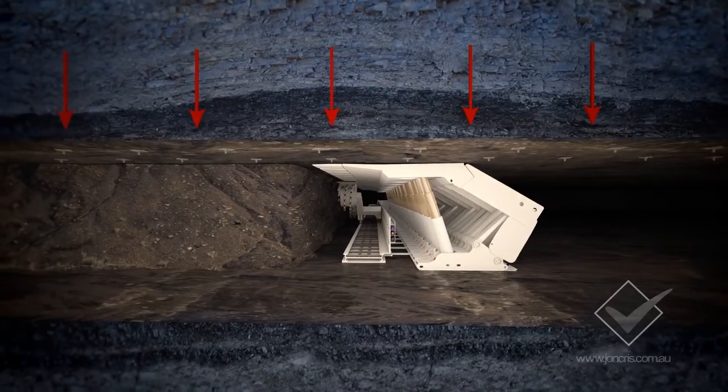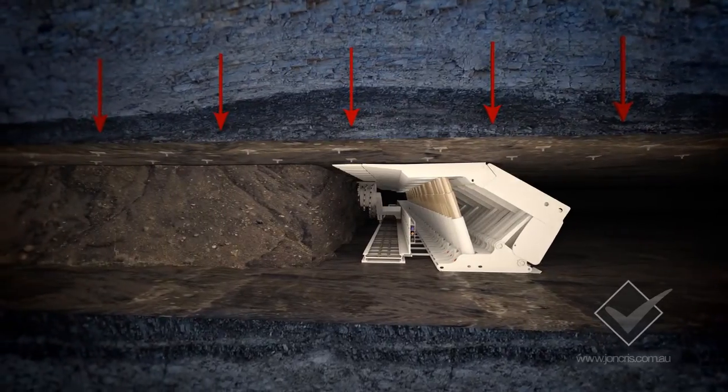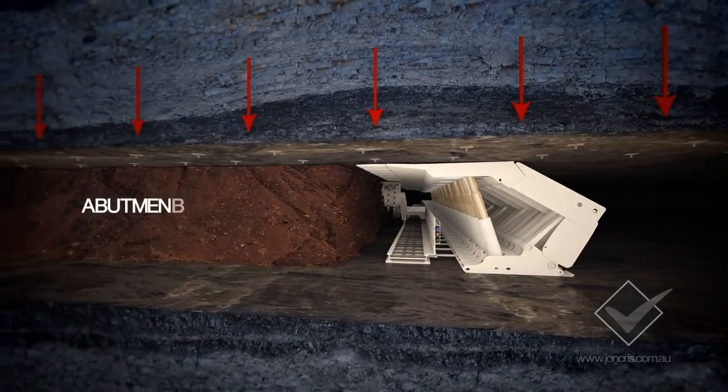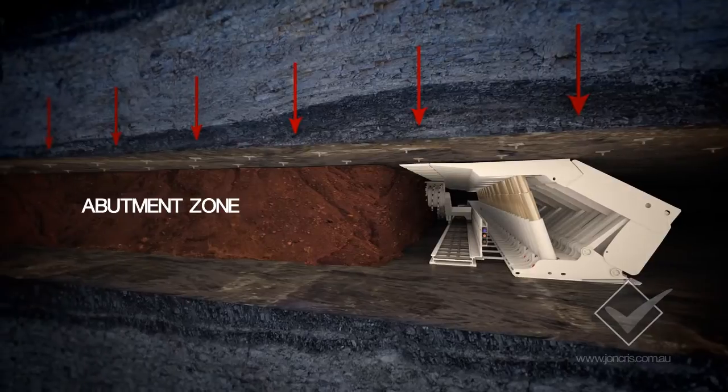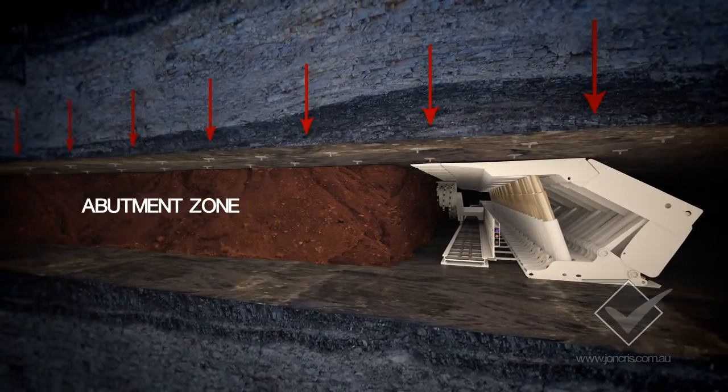The abutment zone in front of the face line is within the coal block and is more evident in the gate roads in advance of the face.